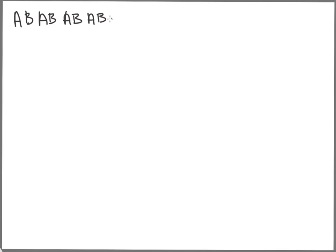Today we're going to talk about Lempel-Ziv-Welch. Let's do an example — we assume that you already know the theory. We want to transmit something like: a, b, a, b, a, b, a, b, a, b, a, b.